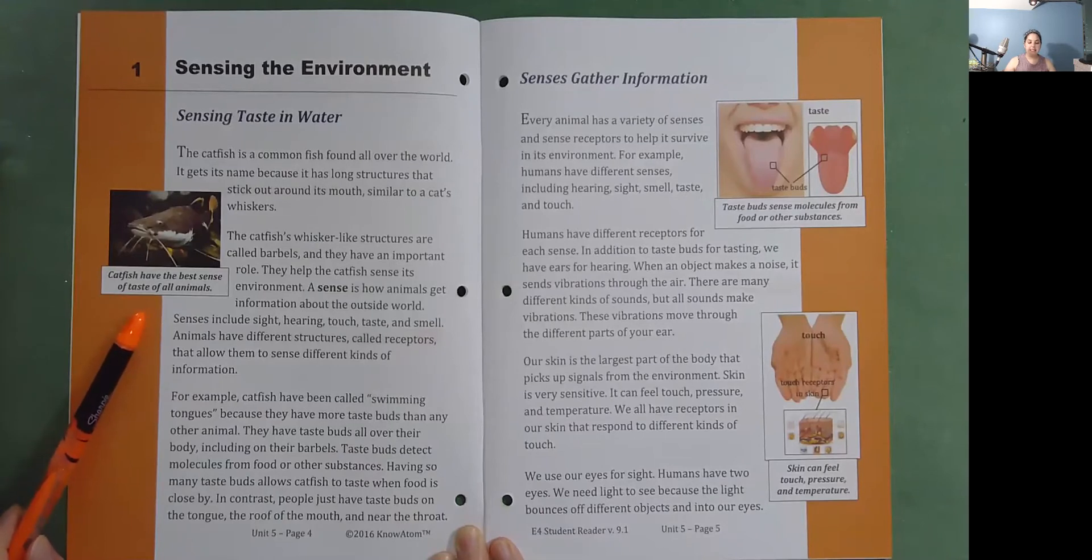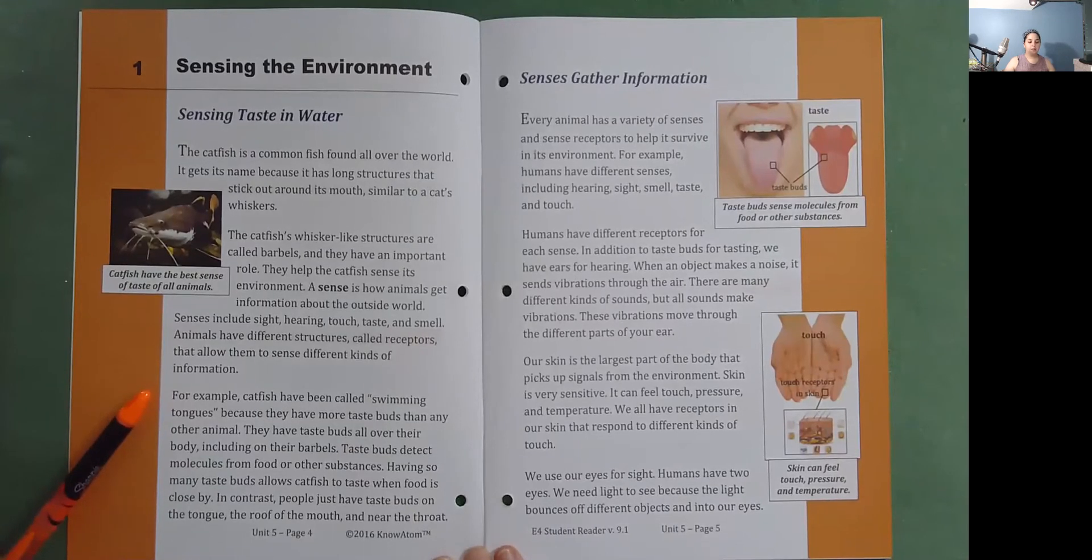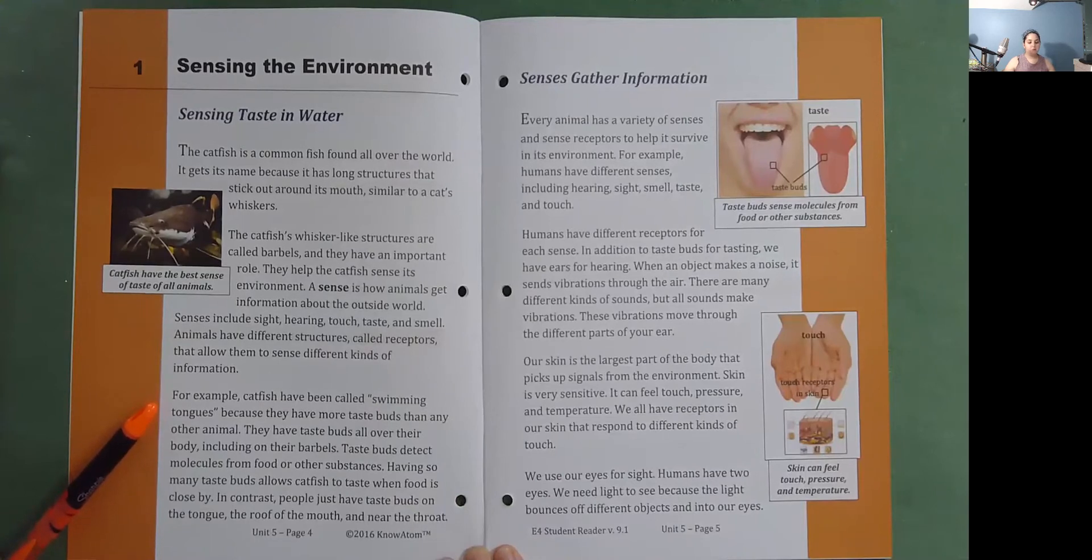A sense is how animals get information about the outside world. Senses include sight, hearing, touch, taste, and smell. Animals have different structures called receptors that allow them to sense different kinds of information. For example, catfish have been called swimming tongues because they have more taste buds than any other animal. They have taste buds all over their body, including on their barbels.